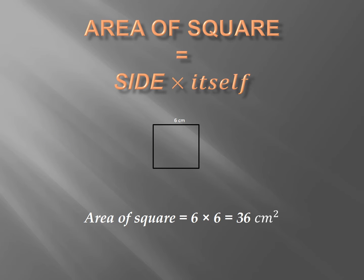Area of square equals side times itself. So, if we have a square whose side length is 6 cm, the area of square equals side times side, so 6 times 6 equals 36 cm².